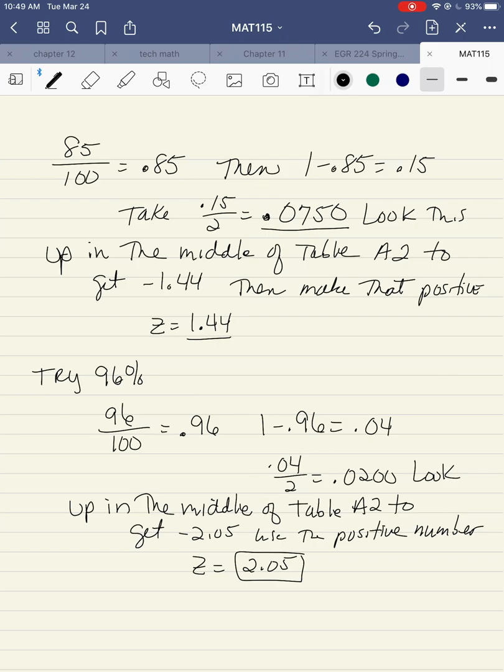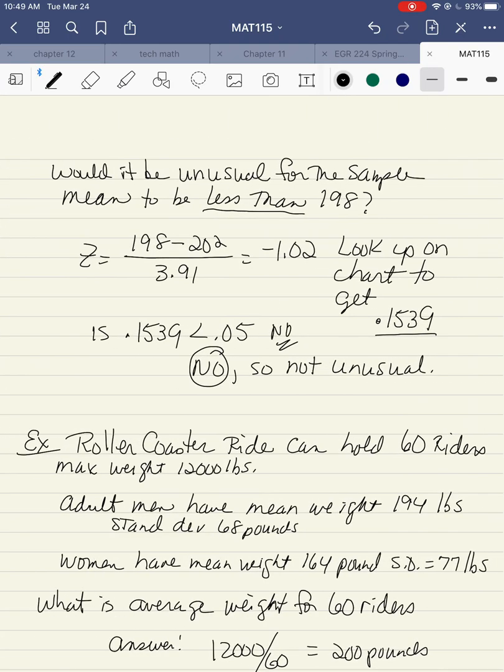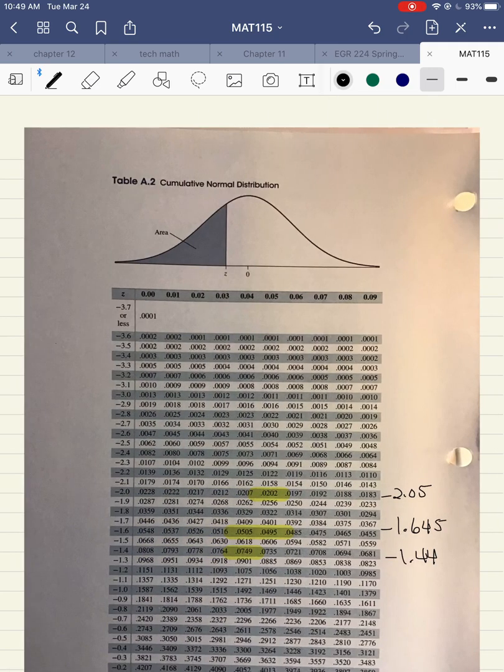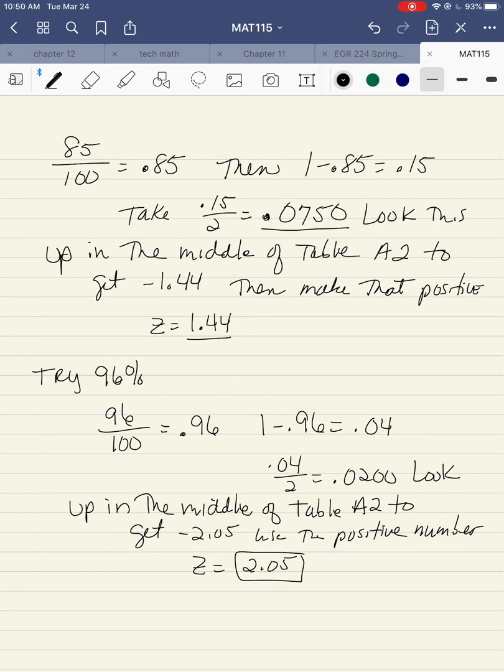This is what you have to look up in the middle of table A2. So if I go back to the middle of table A2 and look that up, it's right here, 0.0749. It's not exactly in the middle, but it's closest to 0.0479. So I would use minus 1.44. That corresponds to a Z value of minus 1.44. And again, I just make it positive. So the critical value here would be 1.44.